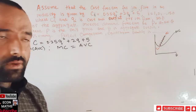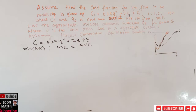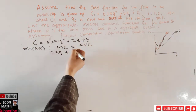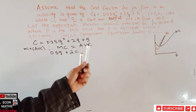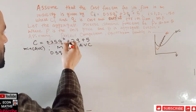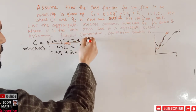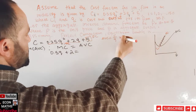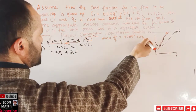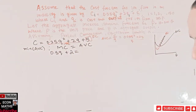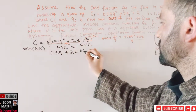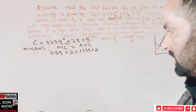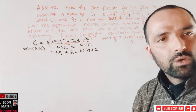Marginal cost is the derivative of the cost function with respect to q: MC = 0.5q + 2. For AVC, we identify the variable cost portion — 0.25q² + 2q — and divide by q: AVC = 0.25q + 2. The fixed cost of 5 is excluded from AVC.